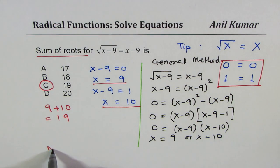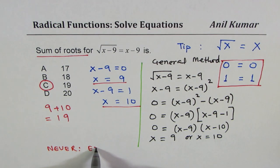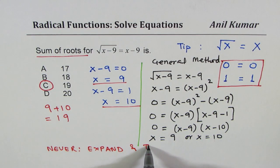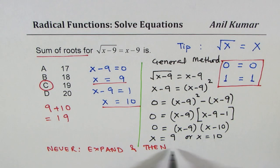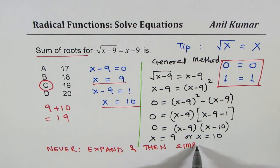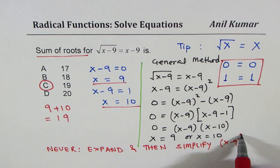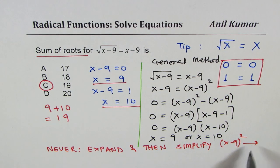Now what you should never do: never expand and then simplify x minus 9 whole square. That will waste a lot of time. But that takes time.